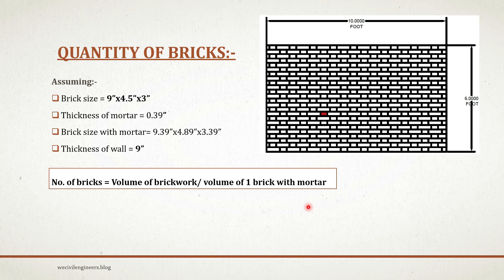So for ease of calculation, I'm converting these inch values into feet. Volume of one brick equals 0.375 feet multiplied by 0.75 feet multiplied by 0.25 feet, which equals 0.070 cubic feet.